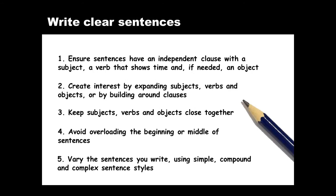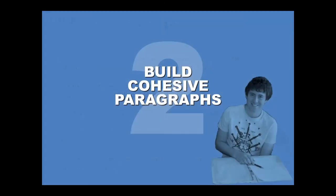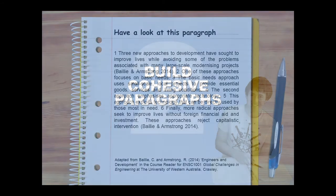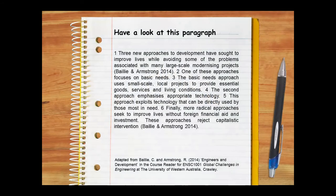Let's now turn our attention from sentences to paragraphs. We'll look at what cohesive paragraphs are, how to construct them, and how to tighten links between sentences. Remember to pause the video whenever you need to. Good writers ensure their paragraphs are cohesive, which means their paragraphs feel tight, their ideas seem to belong together, and their writing just flows. Three things make a paragraph cohesive: paragraph structure, sentence structure, and sentence links.